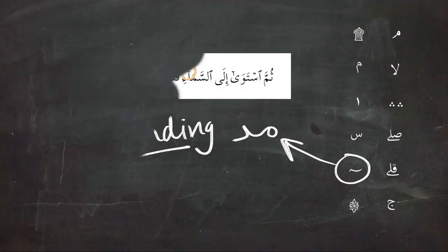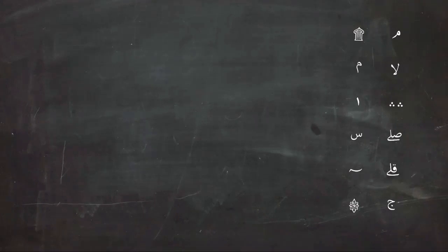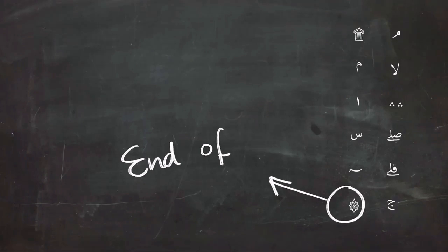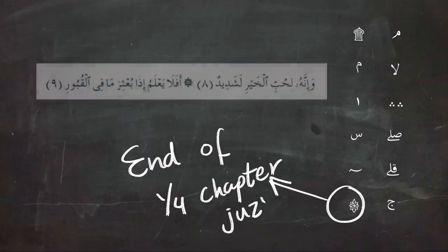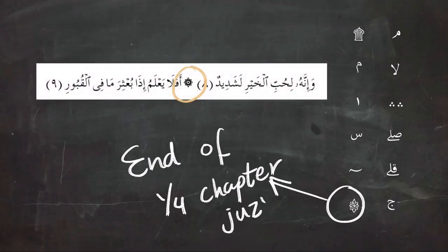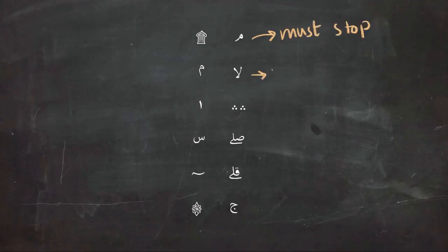The last sign that we're going to talk about today is the sign of the end of the quarter of the chapter or juz. The juz is divided into eight quarters, and at the end of each quarter you are going to see this sign. It doesn't involve any change in pronunciation and it doesn't affect anything of what you say whatsoever. It is just for the division of the Quran.